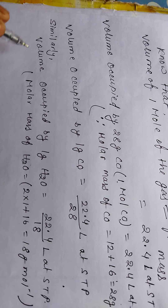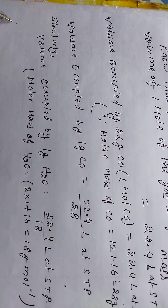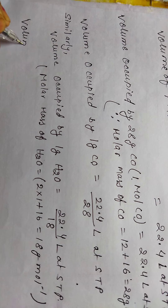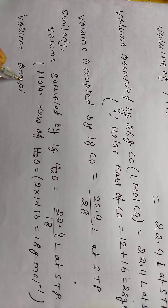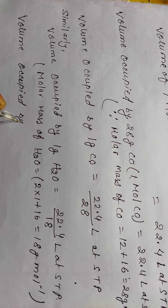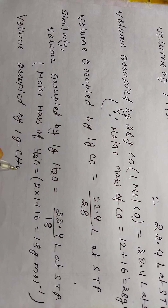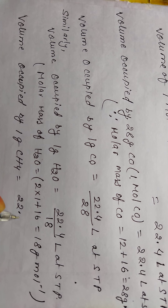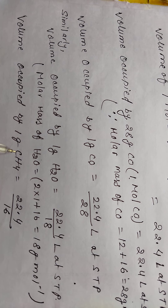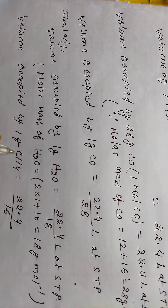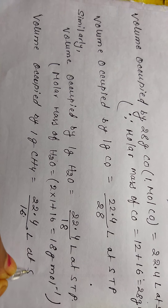The volume occupied by 1 gram of CH₄ = 22.4/16 liters at STP. The molar mass of CH₄ is carbon 12 plus hydrogen 4×1, giving 16 g/mol.